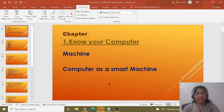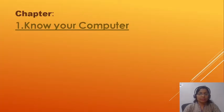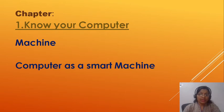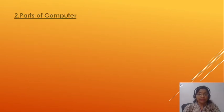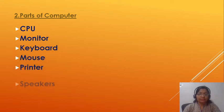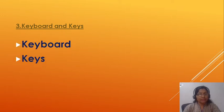We will see the full computer subject syllabus and then do the first chapter. The first chapter is 'Know Your Computer,' which covers two topics: machine and computer as a smart machine. The second chapter is 'Parts of Computer,' covering CPU, monitor, keyboard, mouse, printer, and speakers. The third chapter is 'Keyboard and Keys,' covering keyboard and keys.